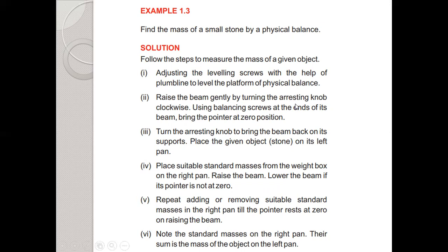Raise the beam gently by turning the arresting knob clockwise. Using balancing screws at the end of the beam, bring the pointer to zero position, placing the physical balance in balanced form. Then turn the arresting knob to bring the beam back to rest on its support.